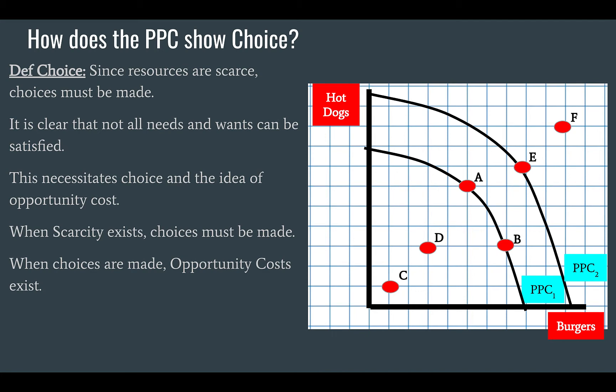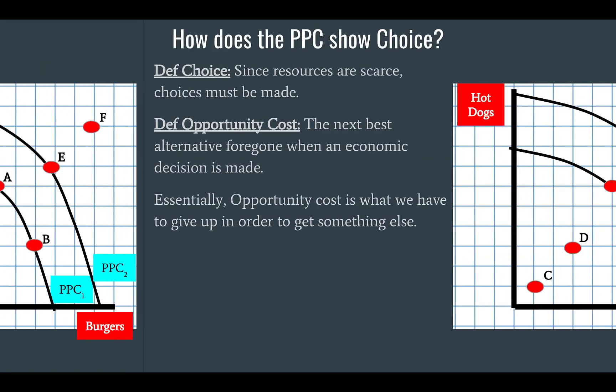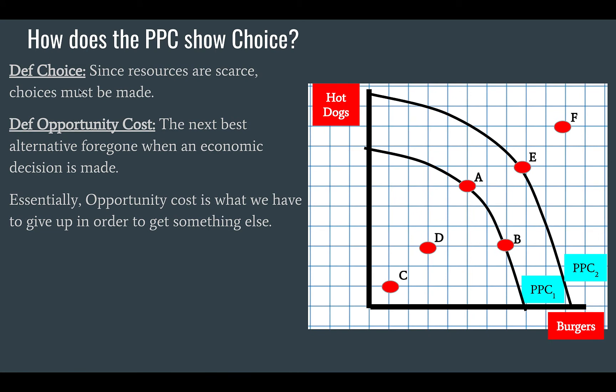It is clear we cannot have everything that we want. When scarcity exists, choices must be made. When choices are made, opportunity cost exists. The definition of opportunity cost — which must also be learned off word perfect — is the next best alternative foregone when an economic decision is made.